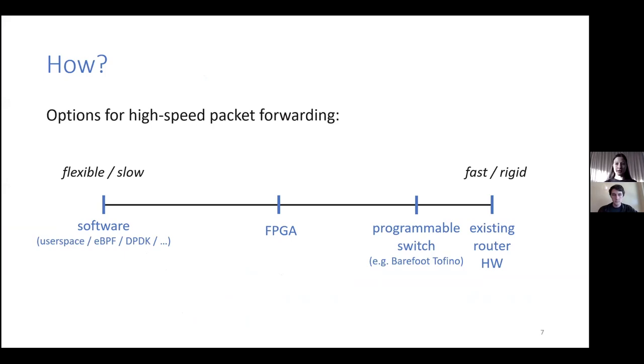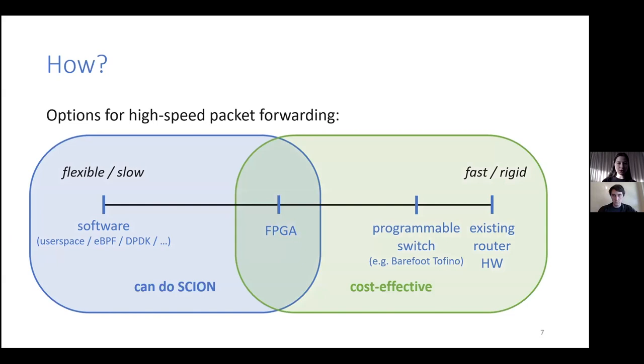Now, how do we build a fast router for this? There is a spectrum of options for high-speed packet forwarding, from software solutions to hardware, such as existing routers or programmable switches, and these are very fast. But because SCION is special, on one hand, we need quite a lot of flexibility to be able to implement it. We evaluated the options further to the right here, and SCION can't be implemented on these easily, or can't be fully implemented.